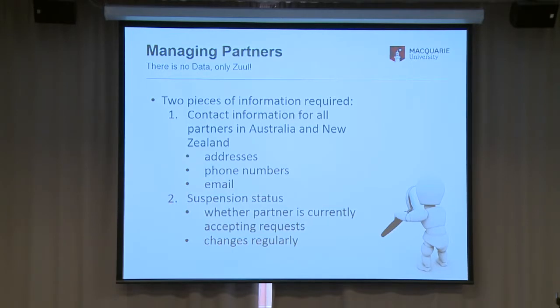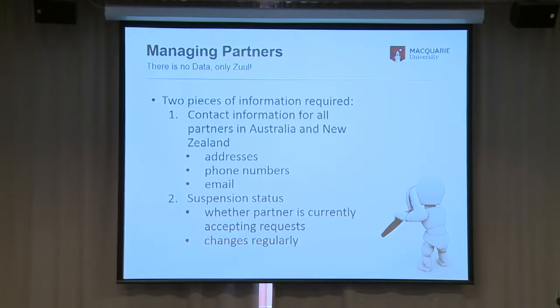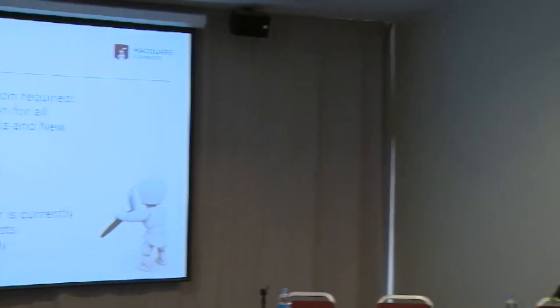So managing partners: there are basically two pieces of information we really need. We need contact information for all the partners in Australia and New Zealand — addresses, phone numbers, email addresses. And the second piece is the suspension status — we need to know whether a partner is currently accepting requests. They might be moving libraries, closing for a holiday, short on staff — any number of reasons why they might suspend services for a certain period. Sometimes it's a few days, sometimes it's a whole year if they're migrating systems. But more common are week closures here or there, and across 1,200 partners, there's a lot that goes up and down.